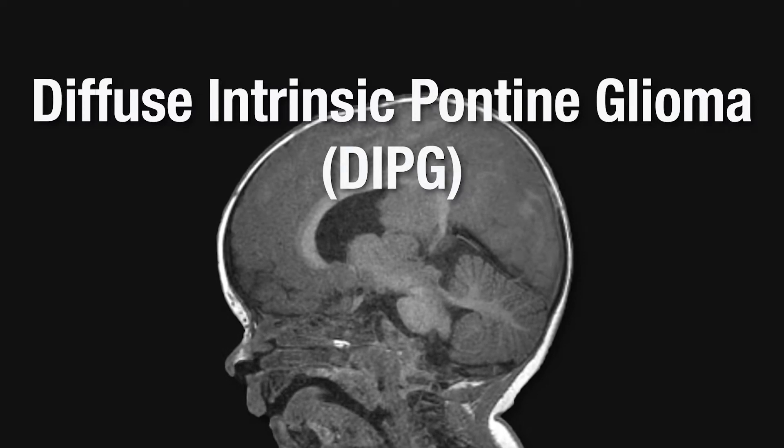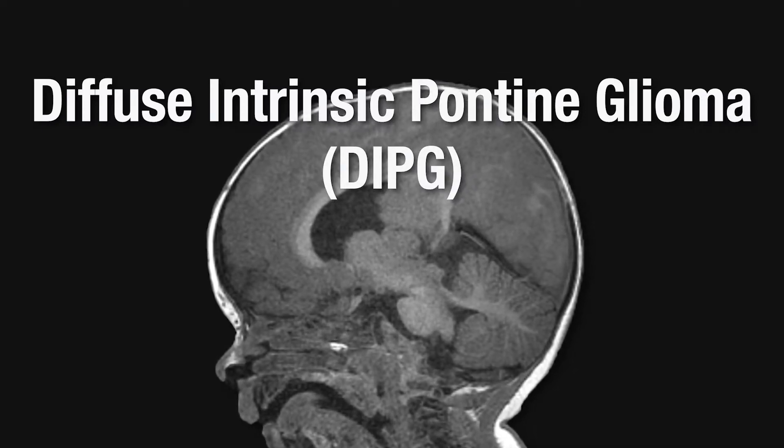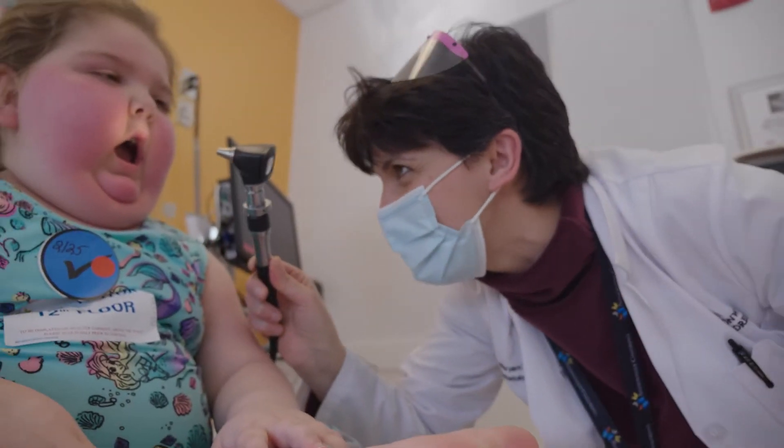Diffuse intrinsic pontine glioma is a terrible disease. It occurs in kids around five to seven years of age. It is uniformly fatal.